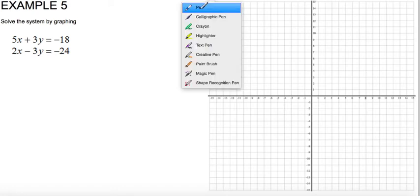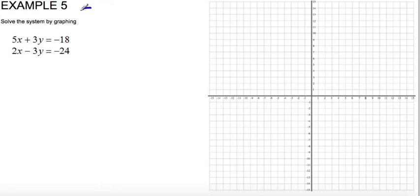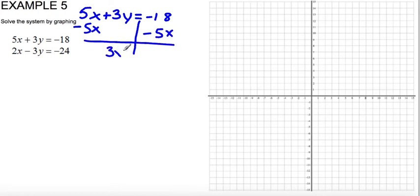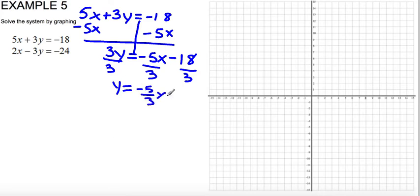So what I'm going to do first is rewrite 5x plus 3y and I'm going to get it in slope-intercept form. So I subtract 5x on both sides. So on the left side, I have 3y, and on the right side, I have negative 5x minus 18. To get y by itself, I have to divide everything by 3. All the terms are divided by 3. So I get y equals negative 5 thirds x minus 6.